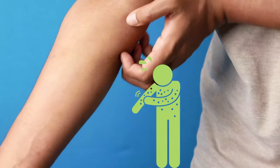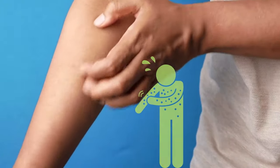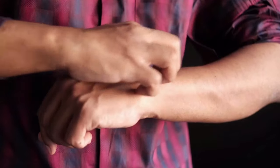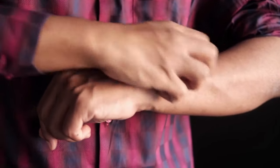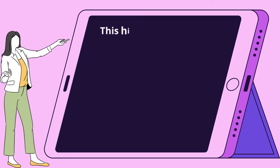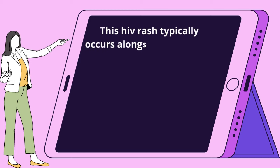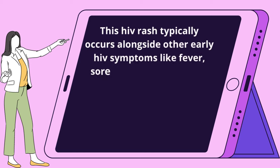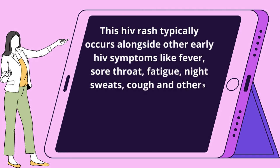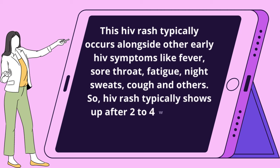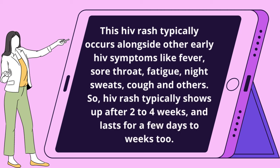...a skin rash 2 to 4 weeks after exposure could be one of the HIV symptoms or signs. This HIV rash typically occurs alongside other early HIV symptoms like fever, sore throat, fatigue, night sweats, cough, and others. HIV rash typically shows up after 2 to 4 weeks and lasts for a few days to weeks.